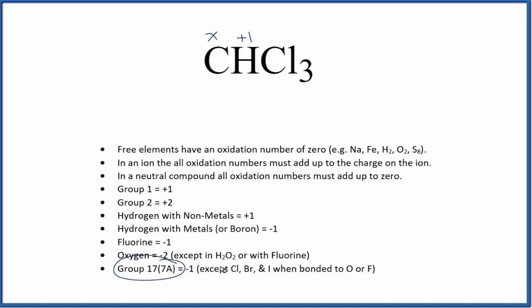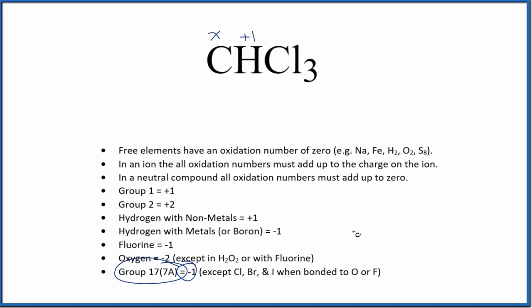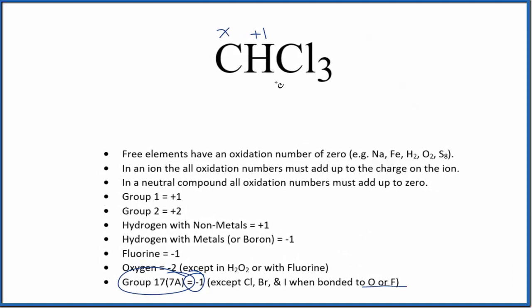And then chlorine. Chlorine is in group 17, sometimes called 7A, and it's negative one most of the time, except when it's bonded to oxygen or fluorine. Here, we don't have any oxygen or fluorine, so each chlorine is going to be negative one.